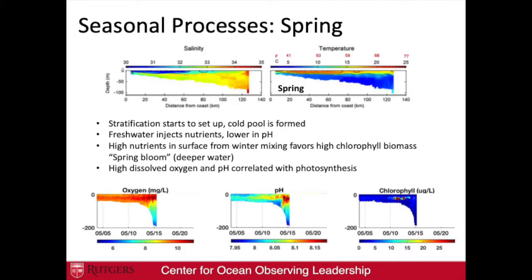When I talk about 'things' being mixed, I'm talking about nutrients. Nutrients have lots of different sources onto the shelf. One is freshwater, which brings in nutrients that support phytoplankton — the base of the food web. We can also get nutrient injections from the shelf slope. There's also a biological source: phytoplankton take up carbon dioxide, and when they die and sink, bacteria remineralize that material, producing nutrients stored at the bottom. During mixing events, those nutrients are brought back to the surface where phytoplankton can reuse them, and oxygen is also vertically mixed in the water column.